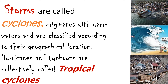Hurricanes and typhoons are collectively called tropical cyclones. Have you noticed that if there is a typhoon, not all places in the Philippines will be affected? Cyclones or typhoons are classified only by geographical location — there is only a specific place or location where they will fall.